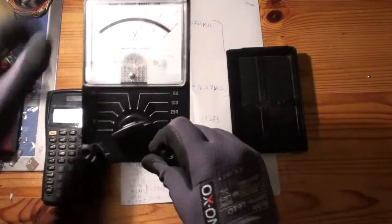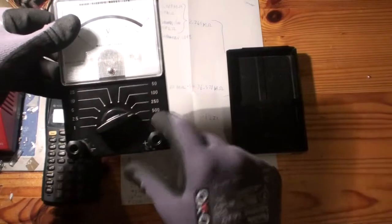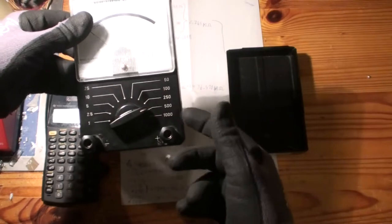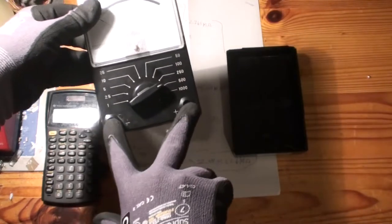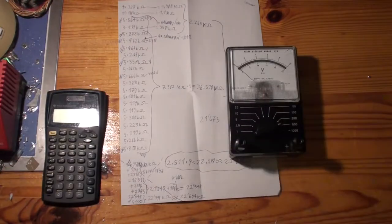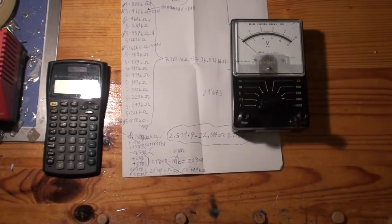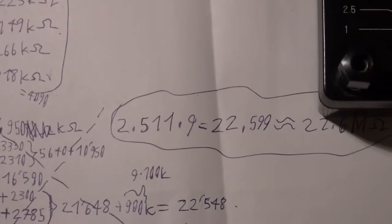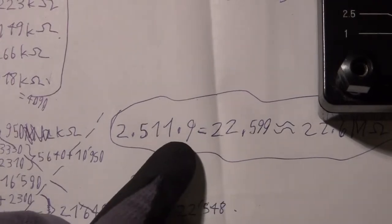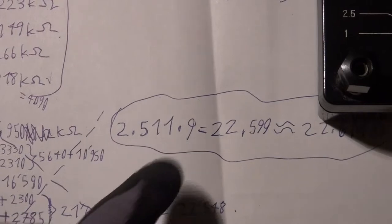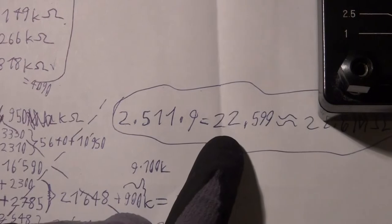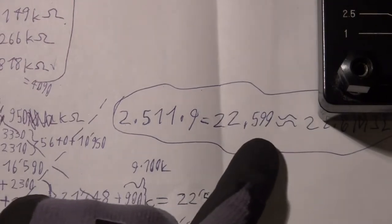And so what we basically have to do is we have to measure the resistance in the range we want to modify, in this case the 500 volt range, and we have to measure on these two points what the resistance is. In my case the resistance is about 2.511 mega ohms which we can see here. Then we have to basically multiply that by 9 if we want to make it 10 times less sensitive and then we get a value of 22.599 mega ohms.